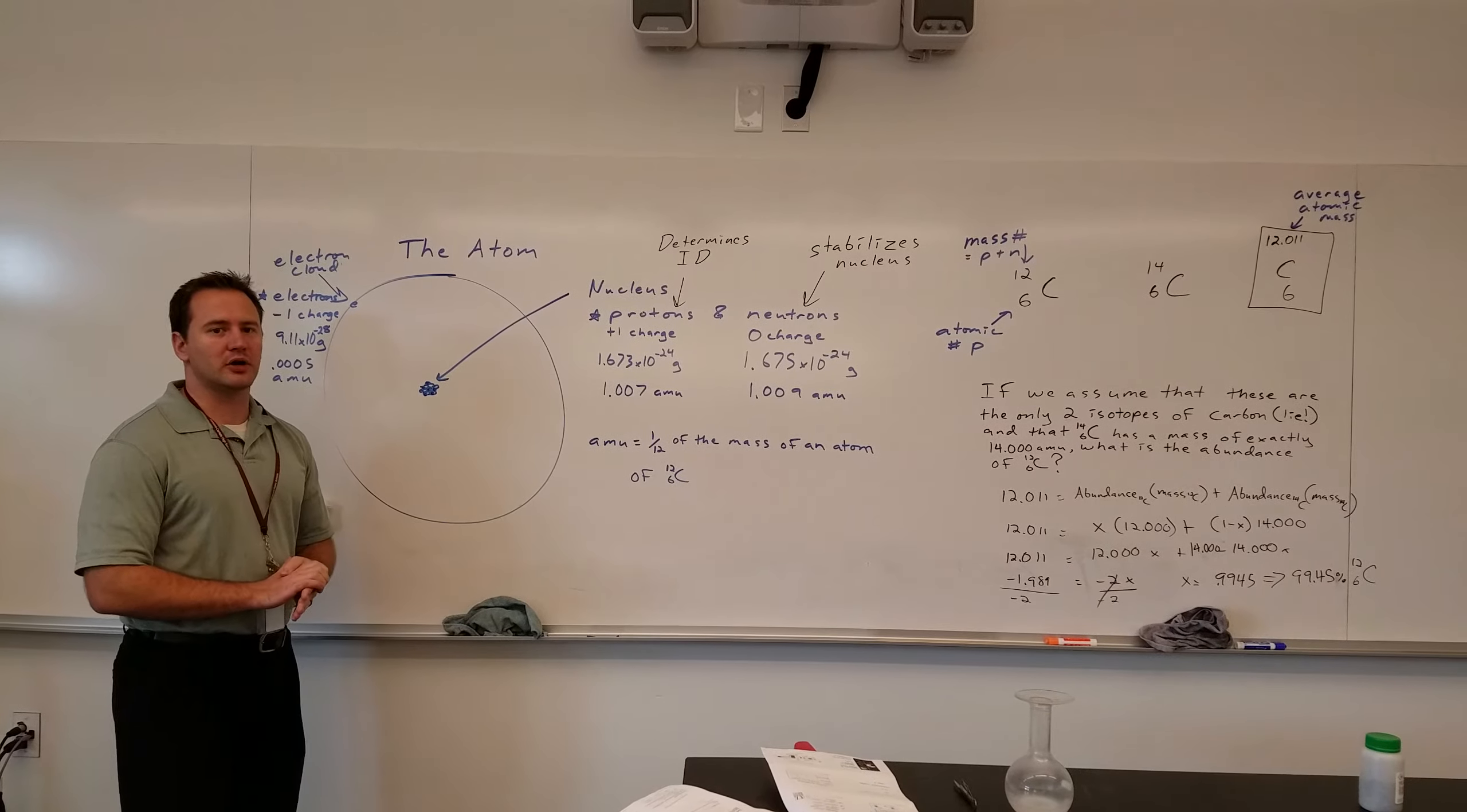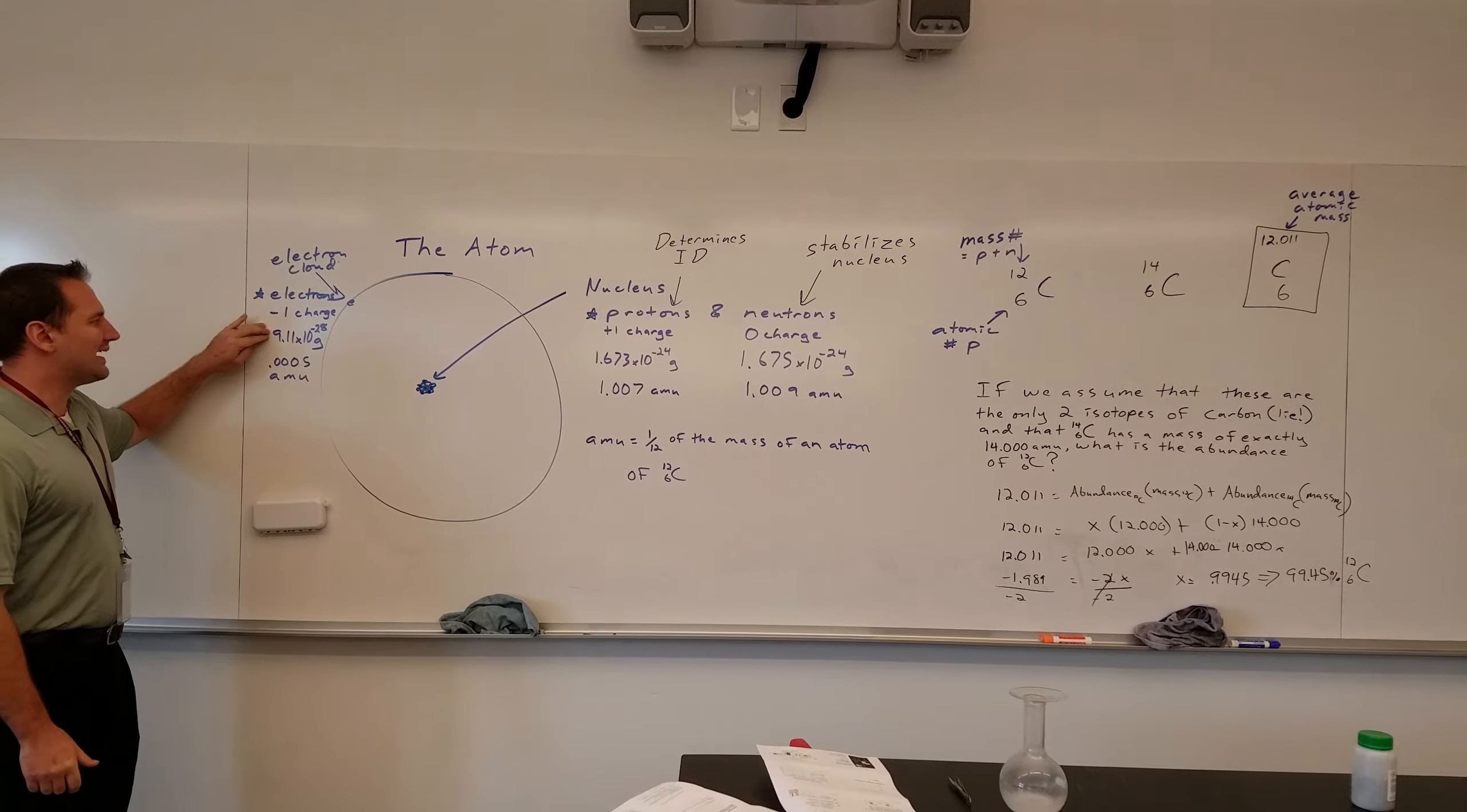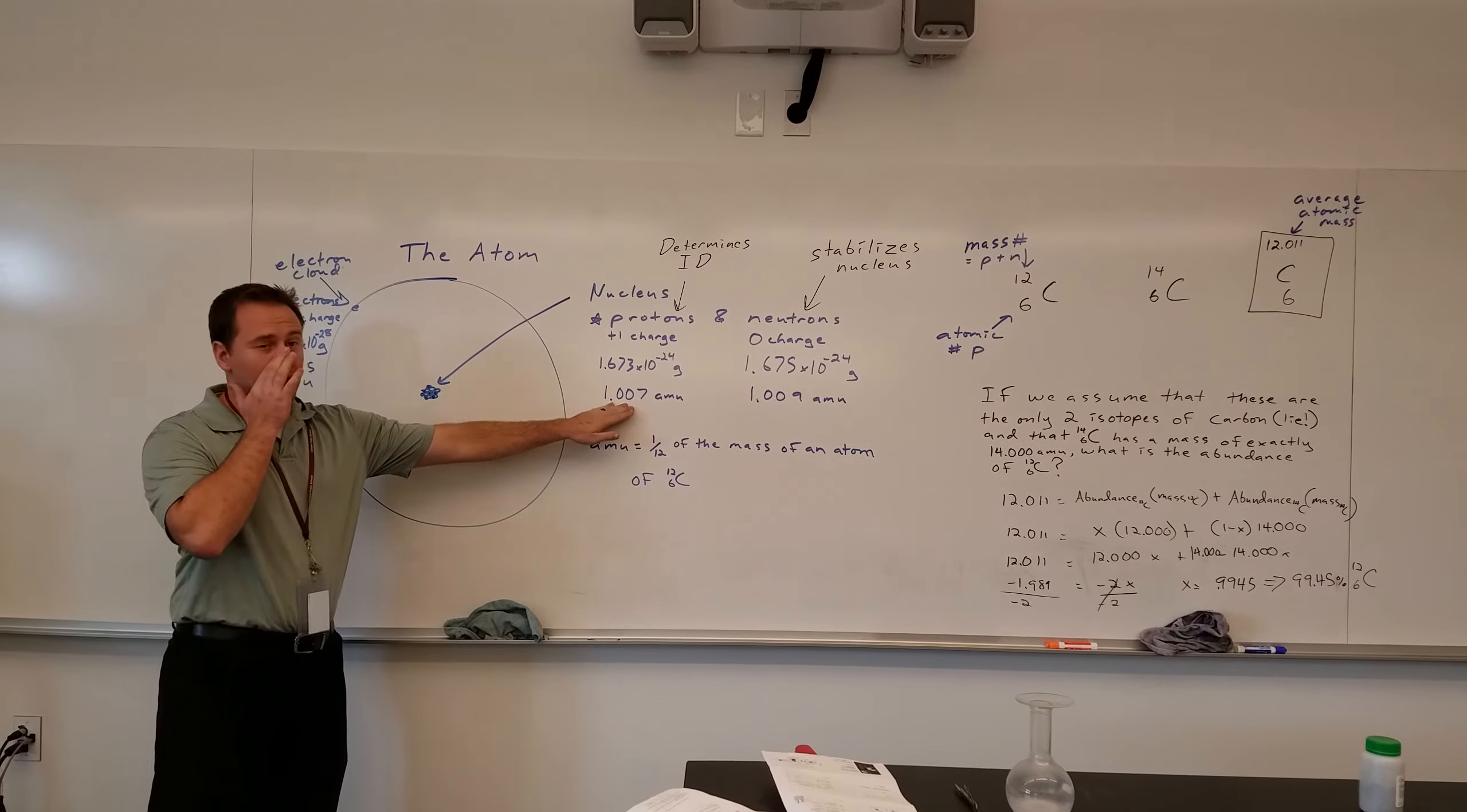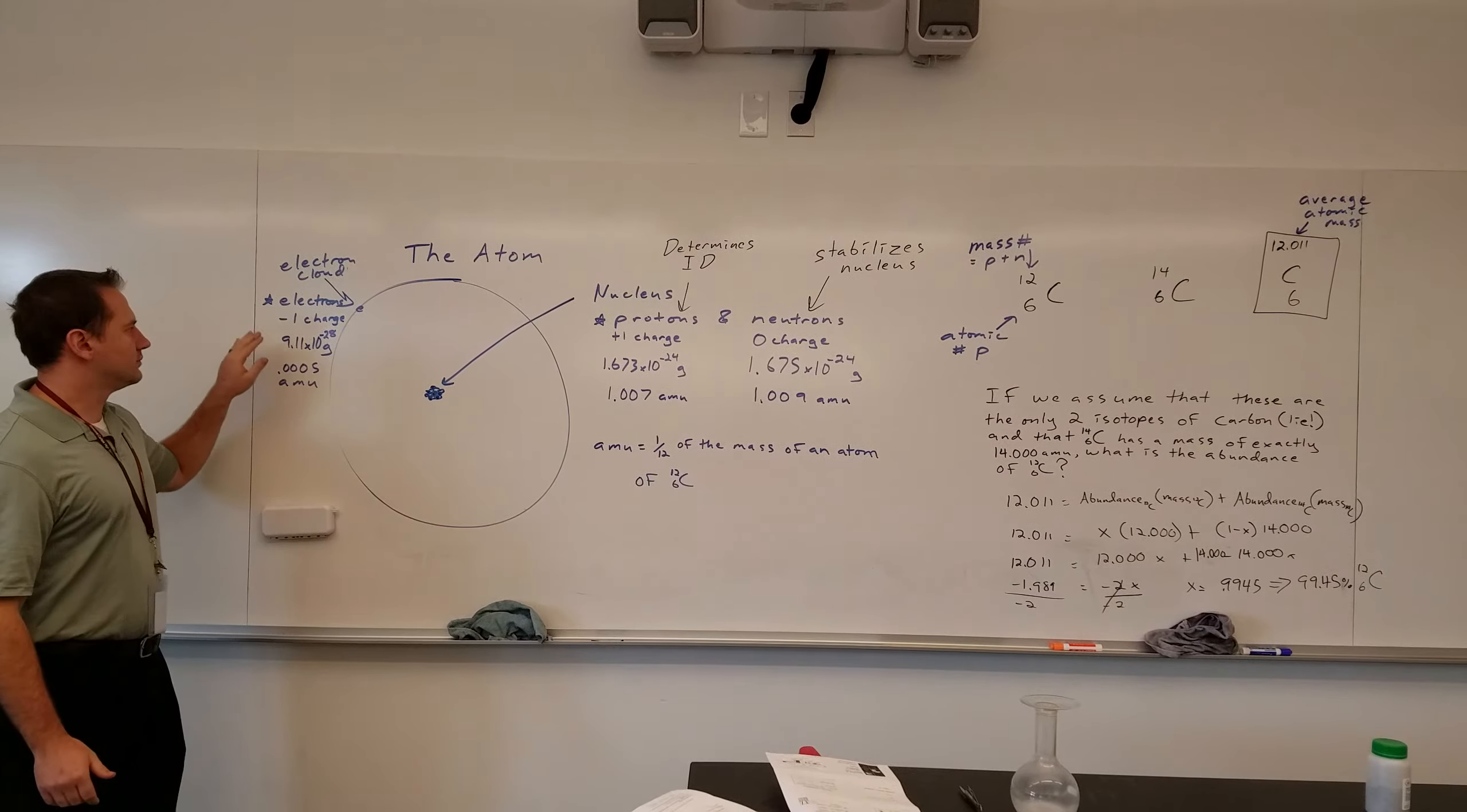Now, the mass of an electron is tiny relative to the mass of a proton. You're looking at these numbers and saying, well, those are all tiny. But really, a proton is almost 2,000 times the mass of an electron. So, these are their masses.